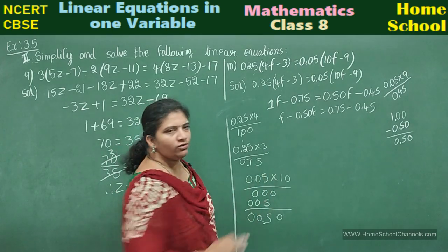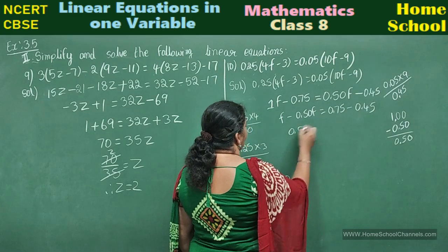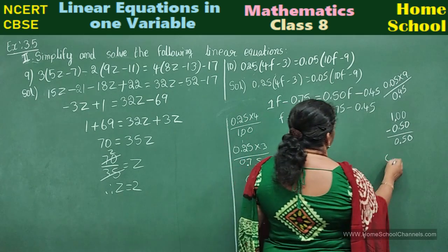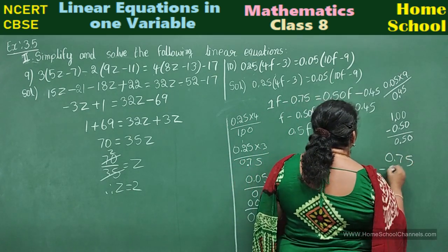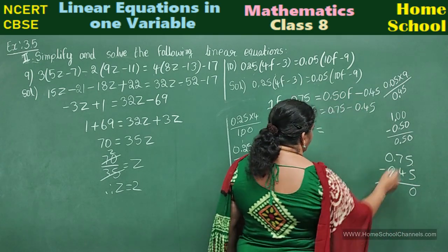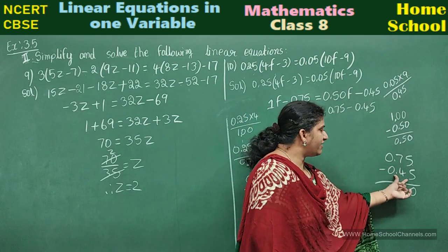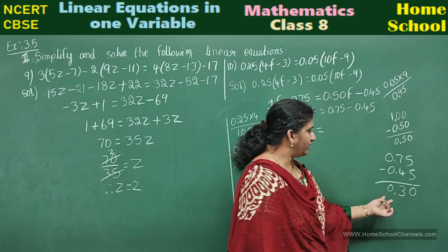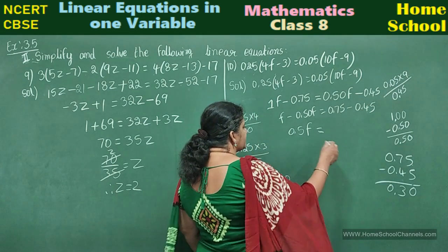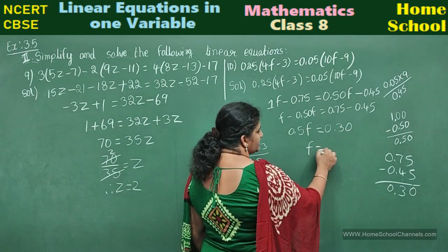So that 0, if you want, you can skip and write here 0.5f equals. Again, subtract these two: 0.75 minus 0.45. 5 minus 5 will be 0, 7 minus 4 is 3: 0.30. There you don't skip 0, take as it is: 0.30.